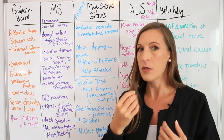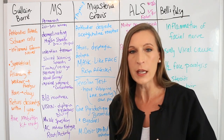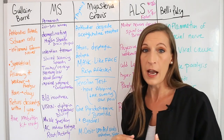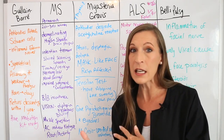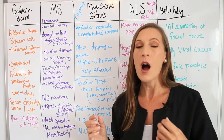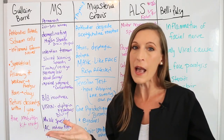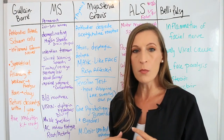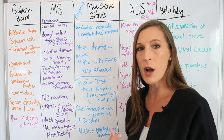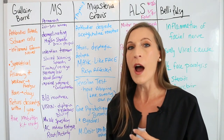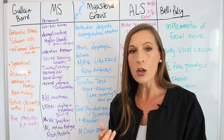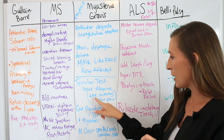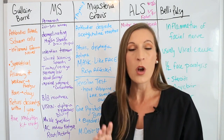Myasthenia gravis presents with ptosis (droopy eyelids), dysphagia, and diplopia (double vision). It does not affect things symmetrically — the patient may have a mask-like face because the facial muscles aren't getting enough acetylcholine, giving a flat affect. The Tensilon test is used: when we give Tensilon, symptoms go away within seconds, but return after about five minutes. If they get too much acetylcholine or too much anticholinesterase drug, they will have symptoms of bradycardia, abdominal pain, and sweating, and will need atropine.